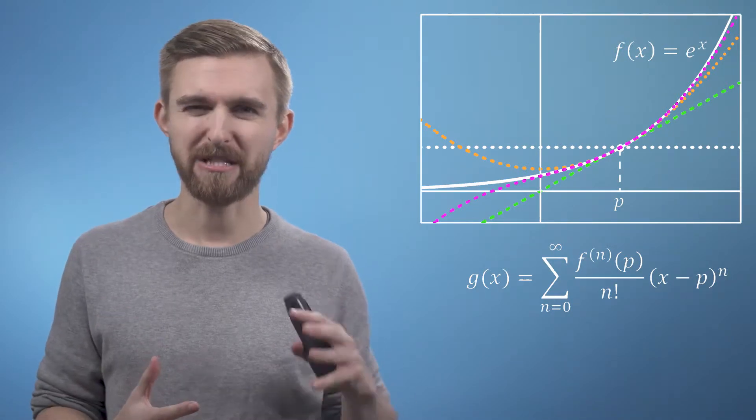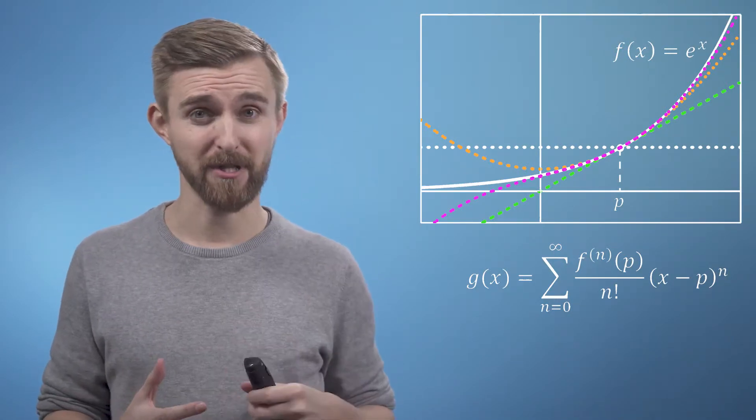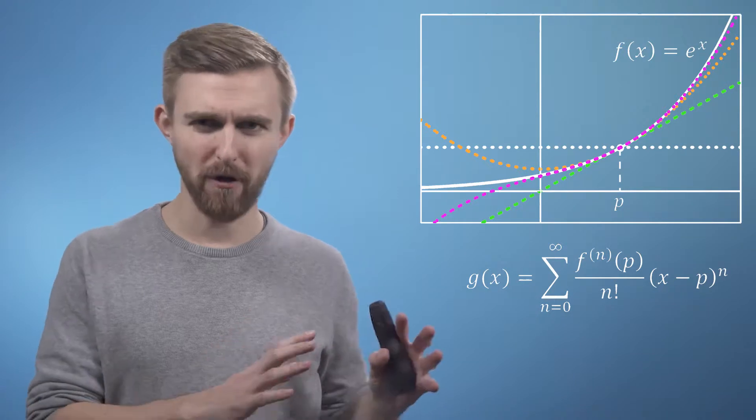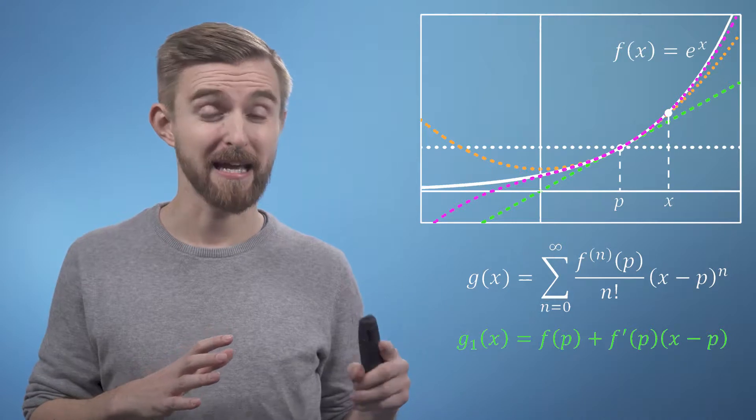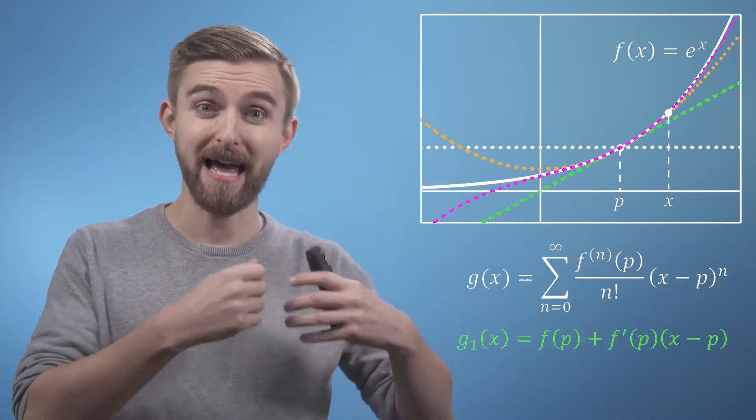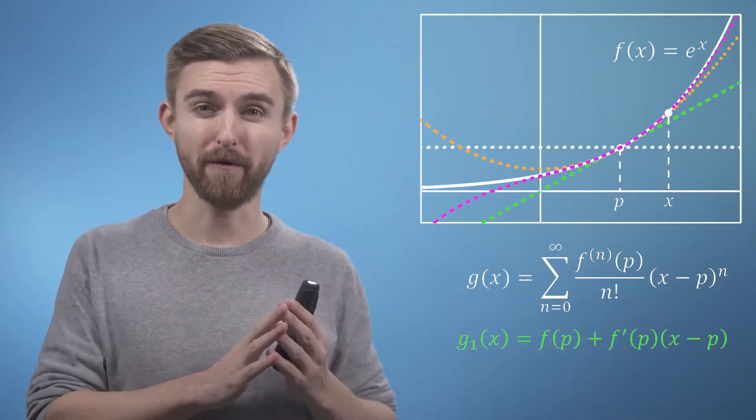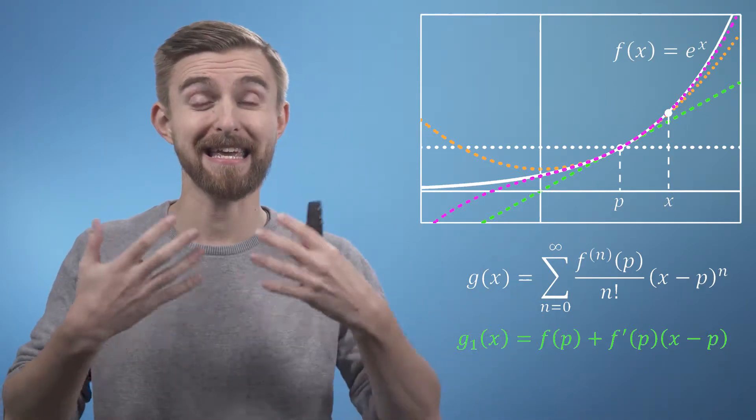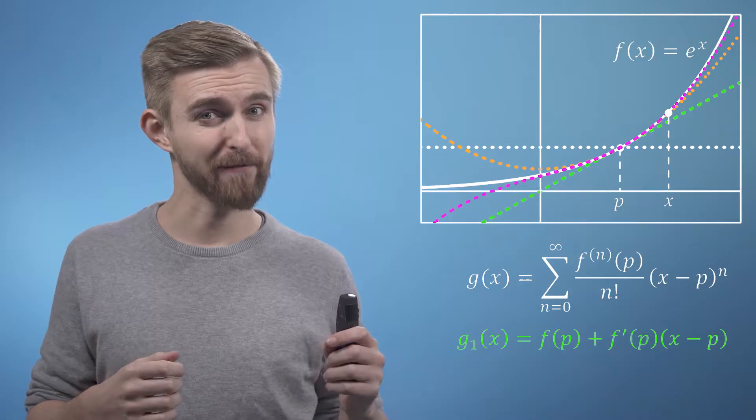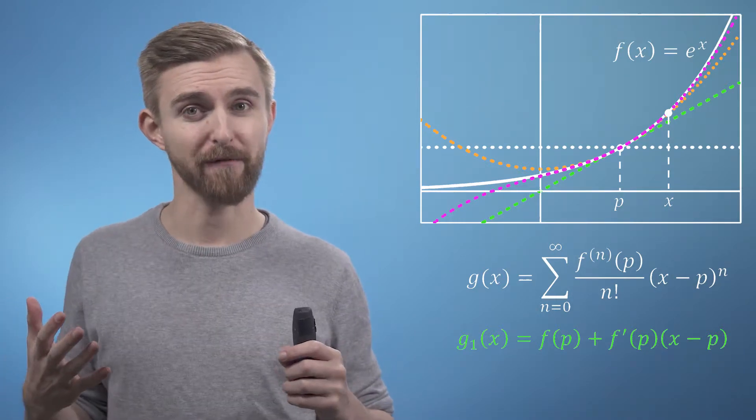All I'm going to do now is change the notation of some of the terms. If we take our first-order approximation as an example, what this expression is saying is: starting from the height f of p, as you move away from p, your corresponding change in height equals your distance away from p times the gradient of your function at p.